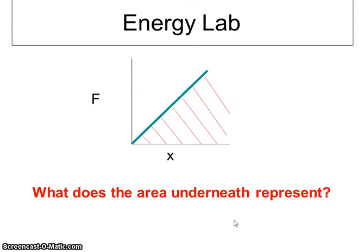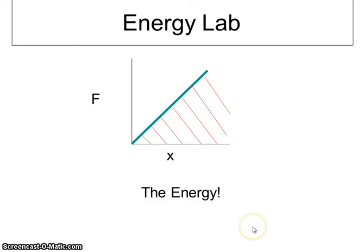But now let's take a look at what the area underneath represents. Because we know in this class, whenever we make a graph, the slope tells us something, the area tells us something. So we know the slope tells us the spring constant. So what does the area underneath tell us? It tells us the energy. So now the question is, what kind of energy are we talking about? Well, since it's a spring, we should know that that's elastic energy.